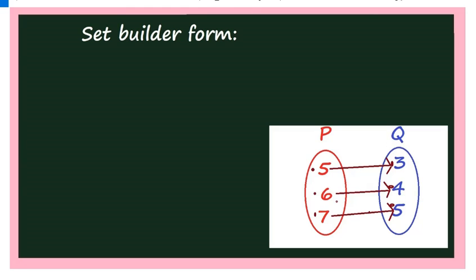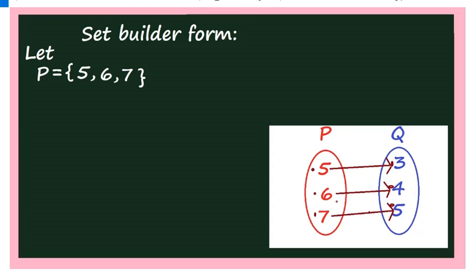What is set P? It contains three elements: 5, 6, and 7. Similarly, write set Q. What are the elements in Q? 3, 4, and 5. Now see the figure: 5 is mapped to 3, that is the image of 5 is 3. And the image of 6 is 4.